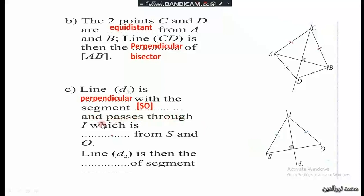And it passes through point I. This is the point I, which as we see is equidistant - I is equidistant from S and O. So line d2 is then the perpendicular bisector of the segment SO.